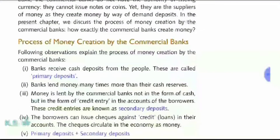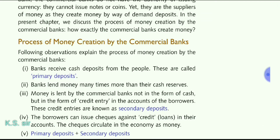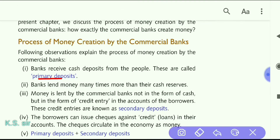Number one: the bank receives cash deposits from the public. These are called primary deposits. When we visit the bank and deposit our money, it is a primary deposit, and for us it is a demand deposit. We can demand this money any time and the bank cannot deny. In the process of credit creation, what we deposit is called the primary deposit.